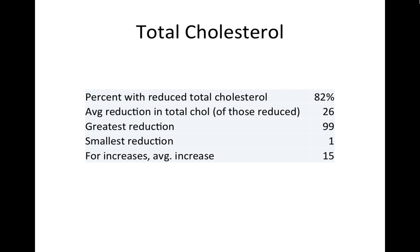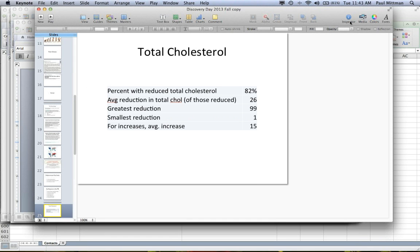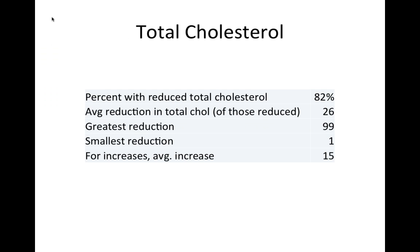We've been doing a class in plant-based nutrition. We've offered a six-week class four times now with well over 100 participants. Overwhelmingly, people lower their cholesterol — the average drop is 26 milligrams per deciliter, which is pretty significant for such a short period of time. One person had their cholesterol go down nearly 100 points. In the 18% where it doesn't drop, the most it's gone up is 15 milligrams per deciliter.